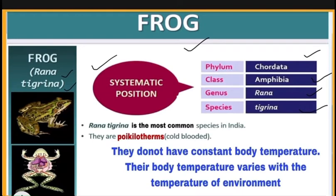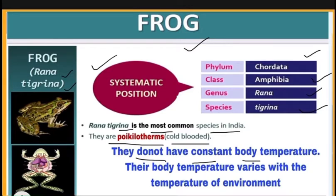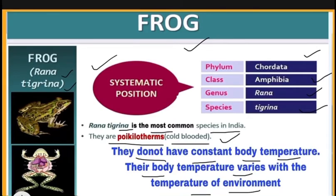Rana tigrina is the most common species in India. They are poikilotherms, meaning they are cold-blooded. Their body temperature is not constant — it varies with the temperature of the environment. That is why they are called poikilotherms or cold-blooded animals.